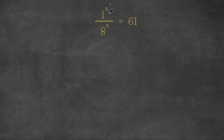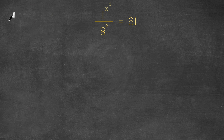What I'm first going to do is deal with this 1 to the power of x squared. If you guys remember, 1 to the power of any number is equal to 1, meaning that 1 to the power of x squared is simply just equal to 1. So this would be 1 over 8 to the power of x is equal to 61.